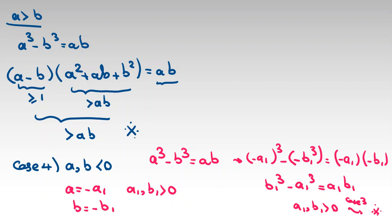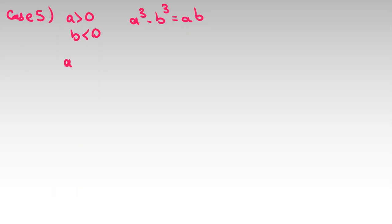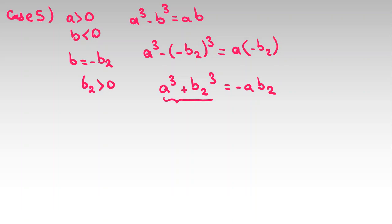We should check the case where one is positive and one is negative. Case 5: suppose a is positive and b is negative. Let b equal to negative b2 where b2 is positive. Then a cubed minus (negative b2) cubed equals a times (negative b2), so a cubed plus b2 cubed equals negative ab2. The left-hand side is positive, but the right-hand side is negative — contradiction.